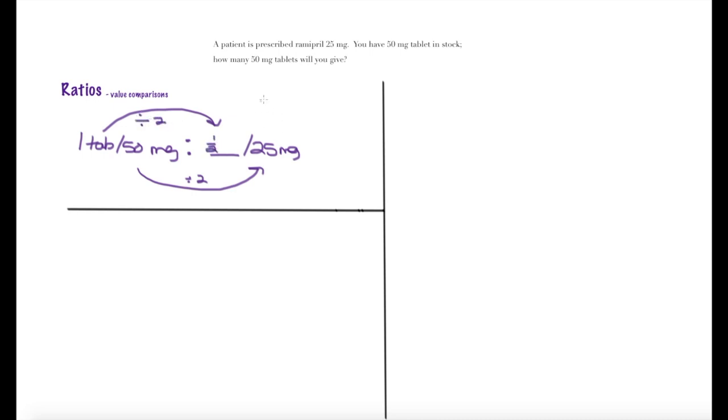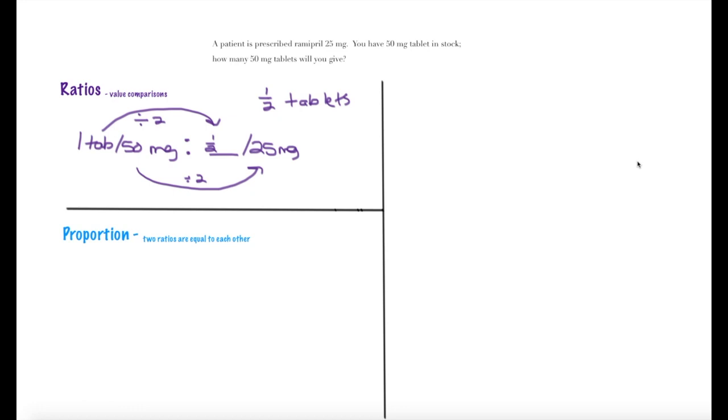With proportions, we're setting up two fractions or two mathematical equations that are equal to each other. So in this case, 1 tablet over 50 milligrams is equal to a question mark over 25 milligrams. This is known as our cross multiply.